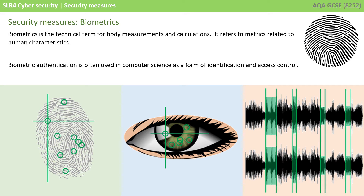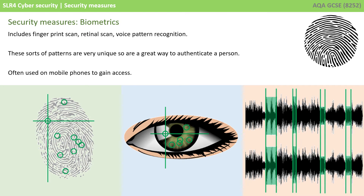The first is biometrics. This is the technical term for body measurements and calculations, and it refers to the metrics — the data or information — related to various human characteristics. Biometric authentication is often used in computer science as a form of identification and gaining access. It includes such things as fingerprint scans, retinal scans, face identification, and voice pattern recognition. These sorts of patterns are incredibly unique, so they're a great way to authenticate a person. You are probably most used to these as a way of gaining access to a mobile phone.